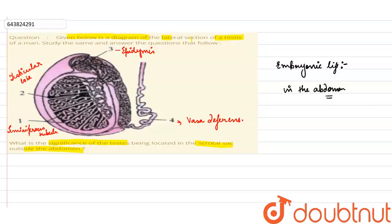By the process of spermatogenesis, sperms are being formed. And for the process of spermatogenesis to be held, the temperature required is about 2 to 3 degrees less.